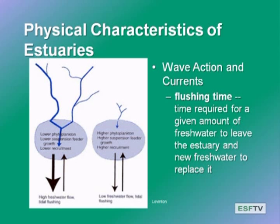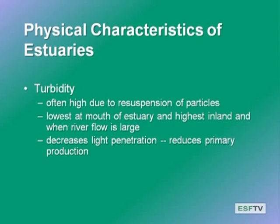Another really important characteristic of estuaries is their turbidity. Often these are very turbid systems, and the productivity of the system is often going to be limited by turbidity that restricts light penetration into the water. Often the turbidity is not very high at the ocean end and is higher as the river flow brings particles from the watershed into the estuary. Sometimes the turbidity maximum is right at the point where the river meets the ocean current, with a lot of suspension of materials and mud from the bottom, reducing light penetration and production.